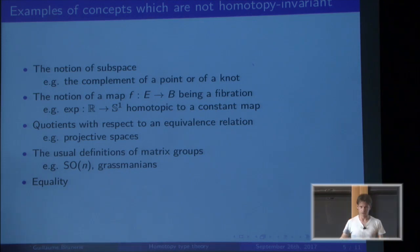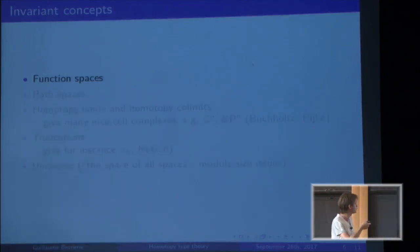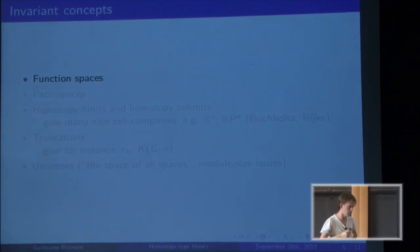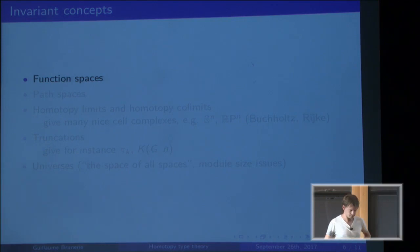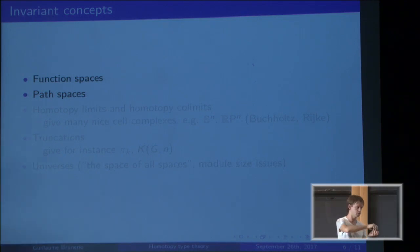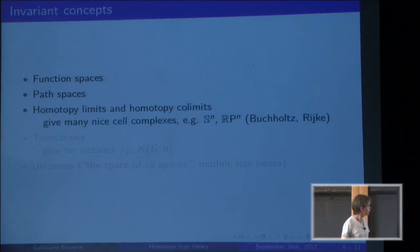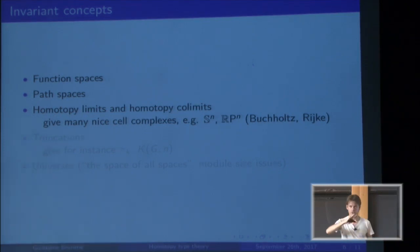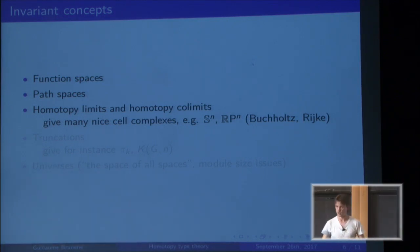There are still many things we can do. We can talk about function spaces — where by 'space' I mean the abstract notion of homotopy type, not a topological space. We can talk about path spaces: given a type and two points in it, we can talk about the type of all paths from one to the other, which is homotopy invariant. We can do homotopy limits and colimits, which lets us construct cell complexes like Sⁿ or ℝPⁿ.